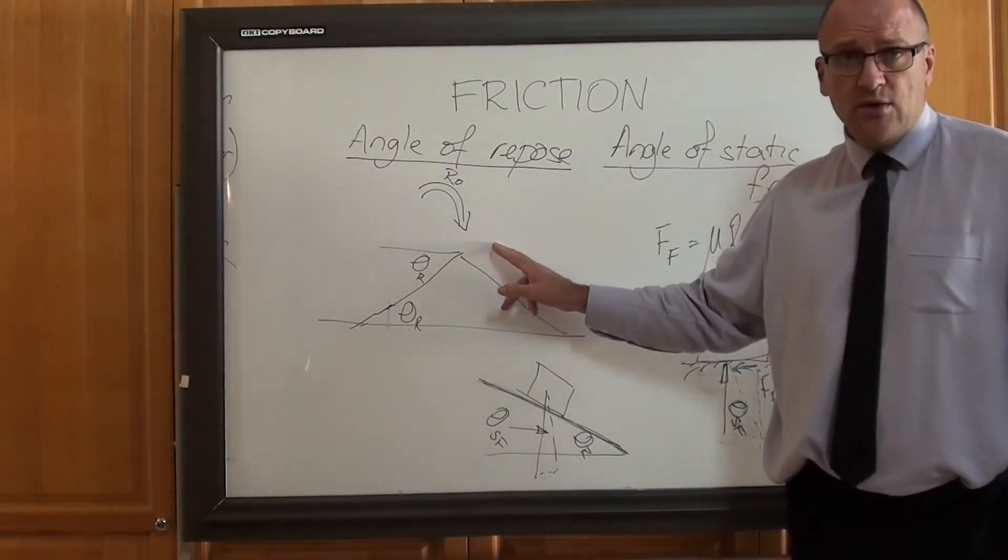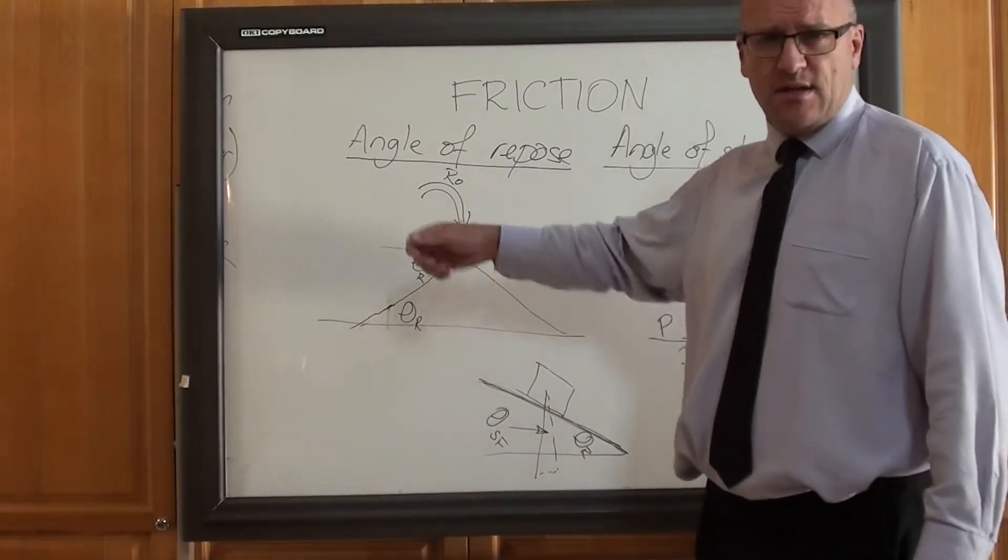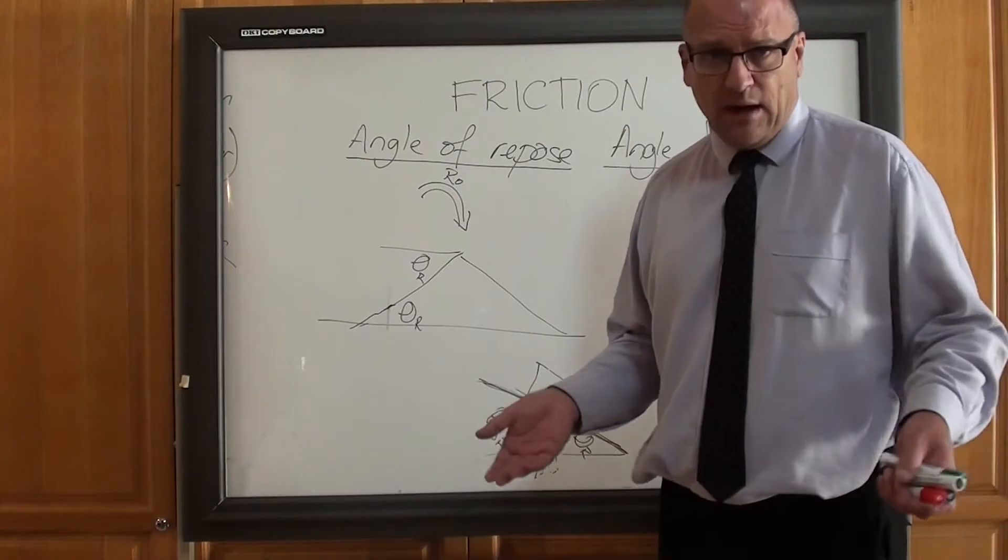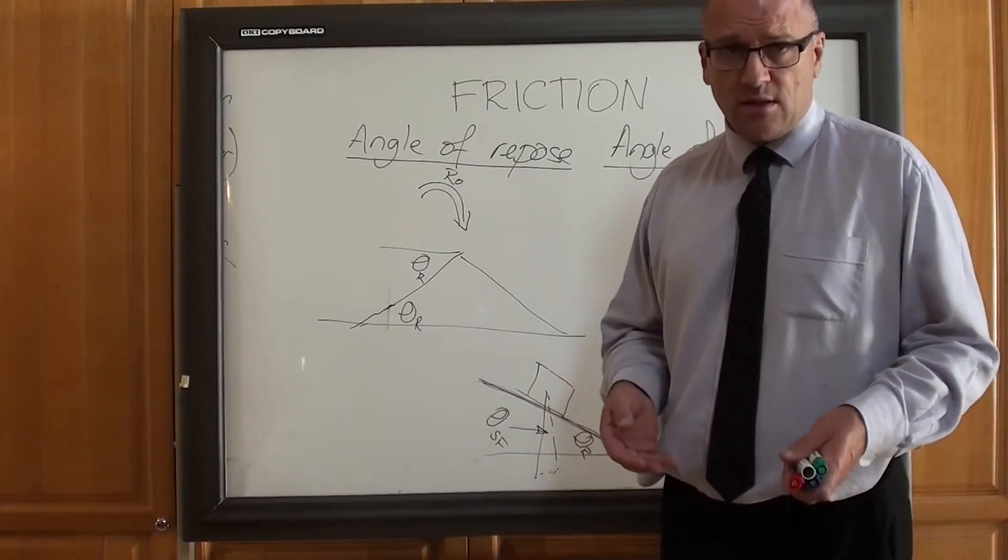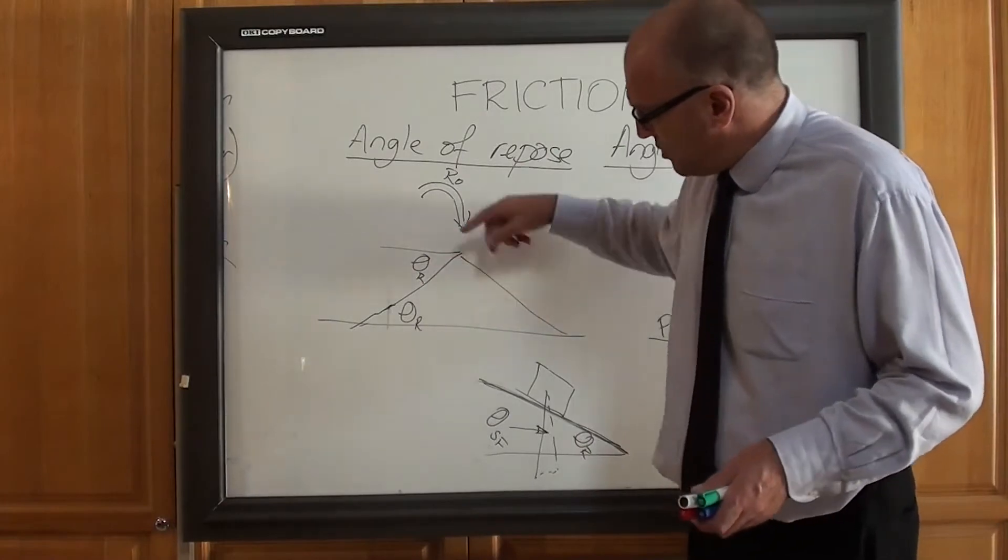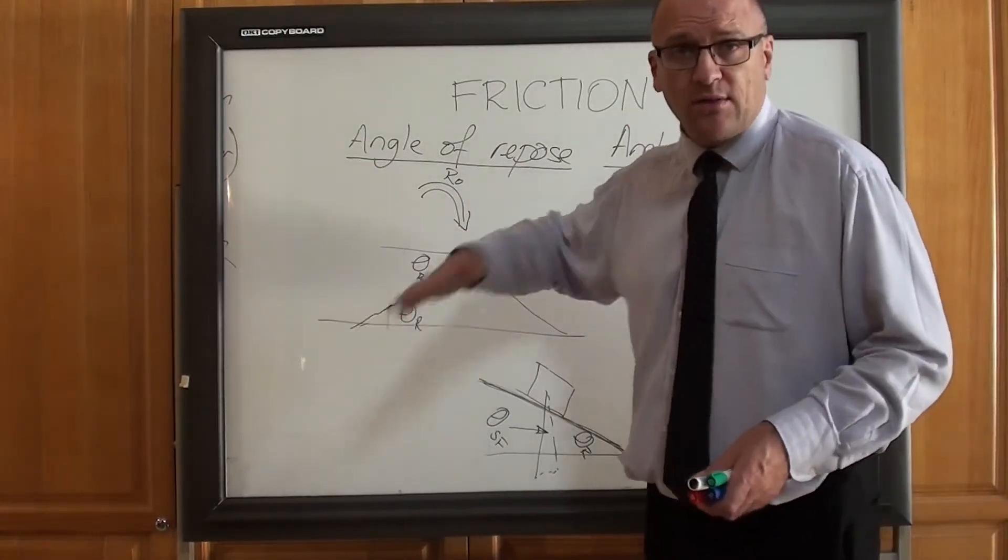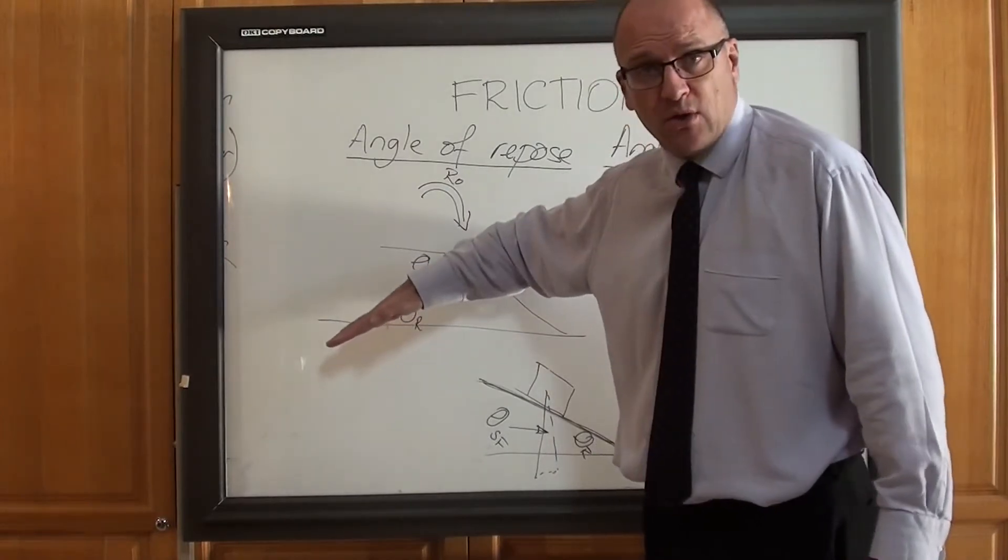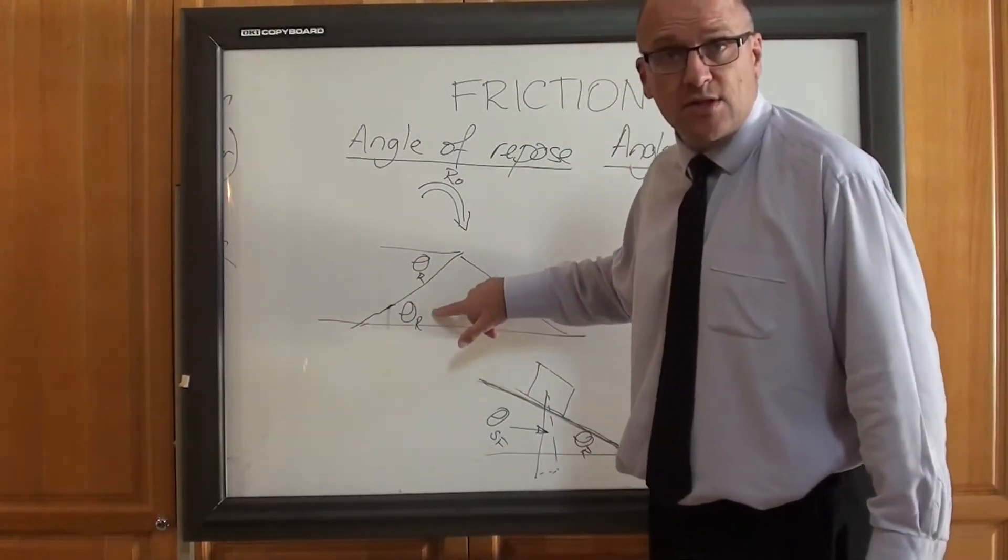The angle of repose is basically if I get sand and tip it in a pile, or rocks and tip them in a pile, or flour, or rice, or marbles, or anything, it will form a natural angle of the pile. That angle the pile is sloping back at is called the angle of repose. I've marked it here as θr.